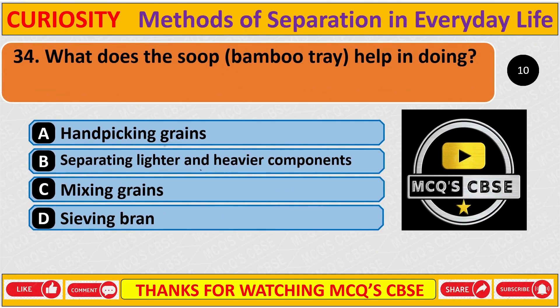Question: What does the scooped bamboo tray help in doing? Correct answer is B: Separating lighter and heavier components.